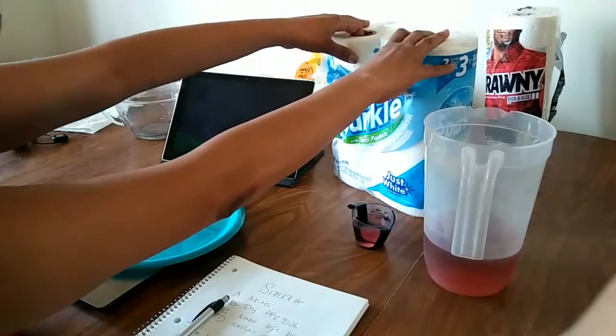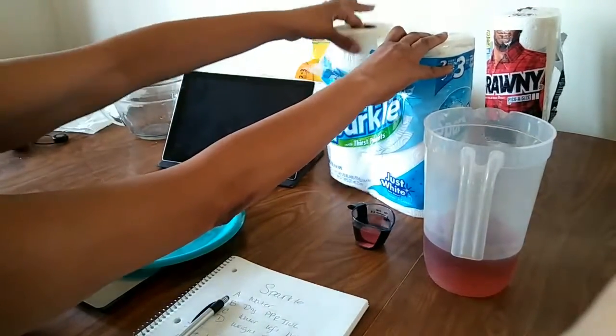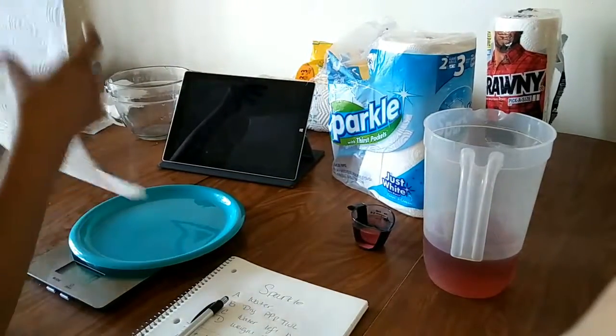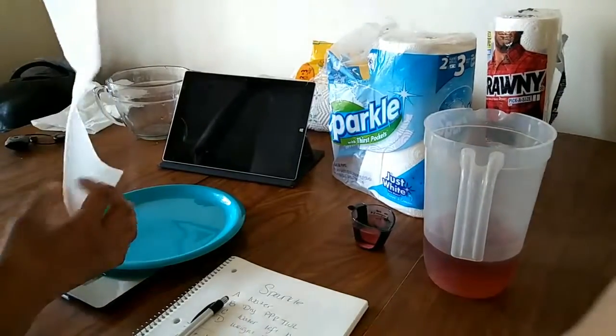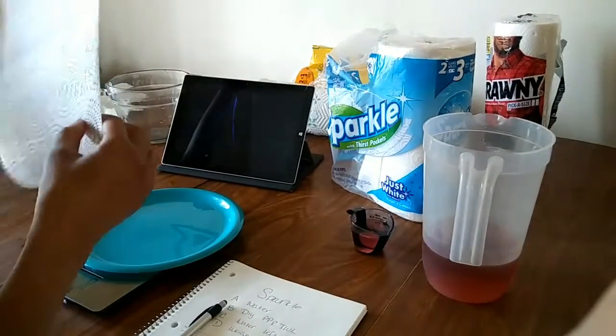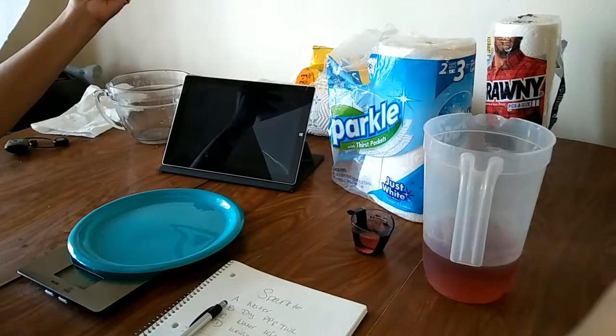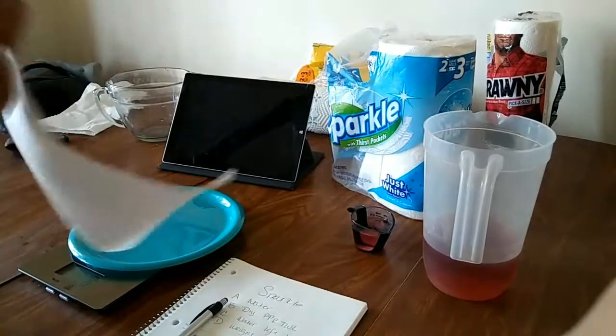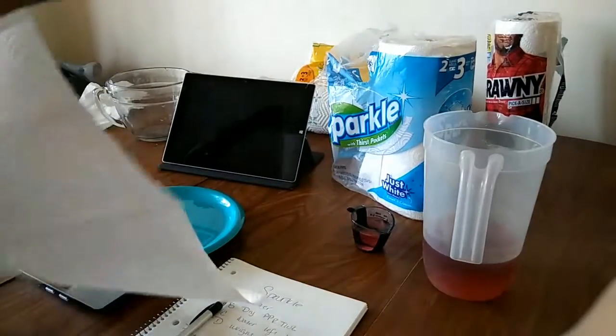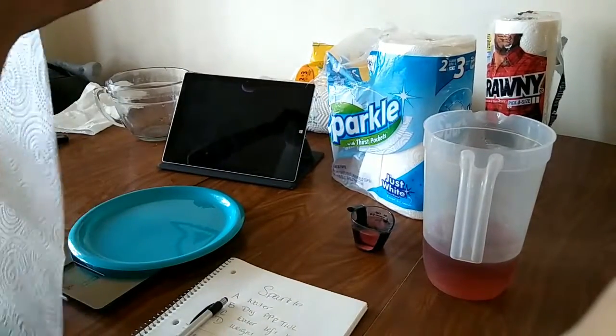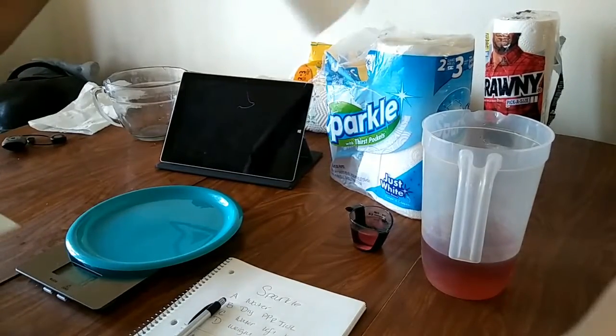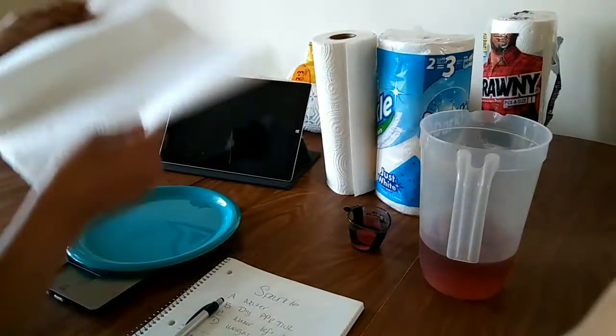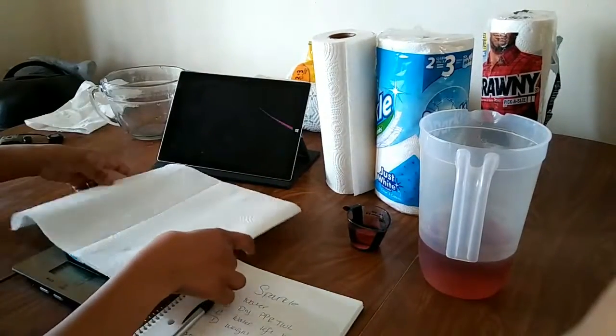Next we're gonna go ahead and measure the weight of the dry paper towels. These paper towels look like they are select the size. So obviously this little half a sheet isn't one sheet of paper towels. So we're gonna go one, two, that's gonna be one and then one and a half and then two. So that's gonna be two sheets of this Sparkle brand paper towel. I'm gonna go ahead and just leave it open for measurement sake.